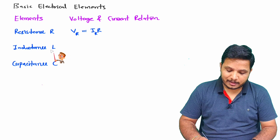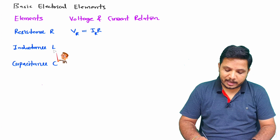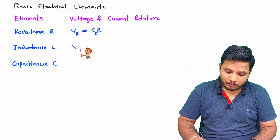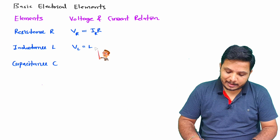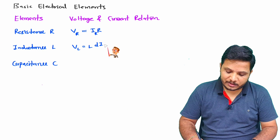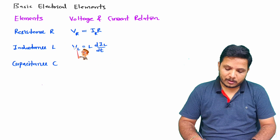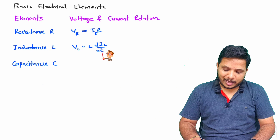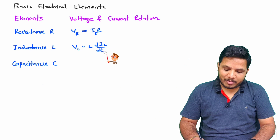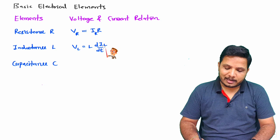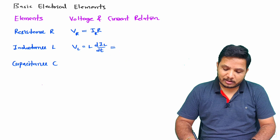When you want to establish the relationship of voltage and current for inductance, the voltage across the inductance equals inductance times the rate of change of current passing through the inductance with respect to time. So VL equals L times di/dt, where VL is the voltage across the inductance and IL is the current passing through the inductance.